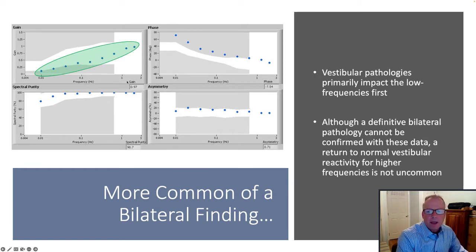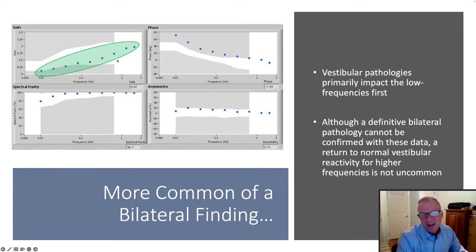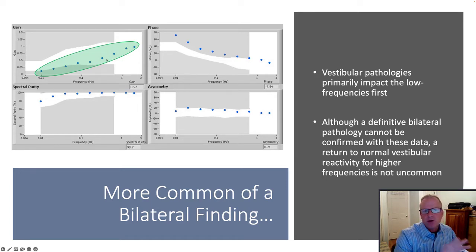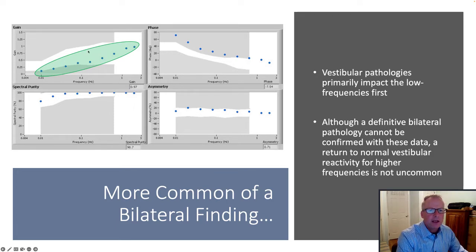Although a definitive bilateral vestibulopathy can't be confirmed until we do other studies such as VEMP and vHIT, this is a fairly common pattern for a bilateral VOR reduced response.